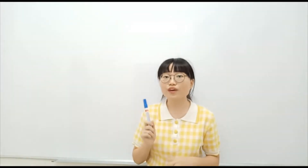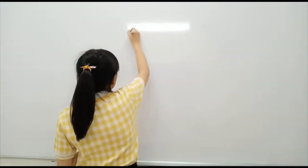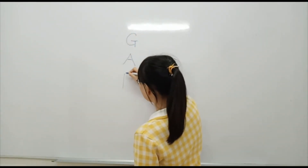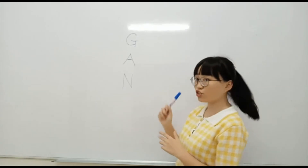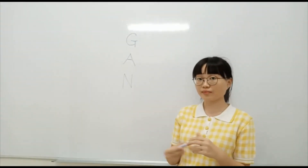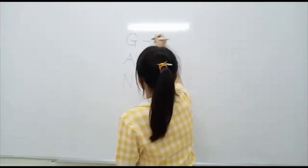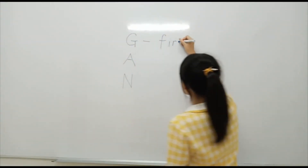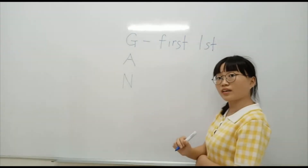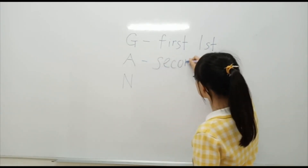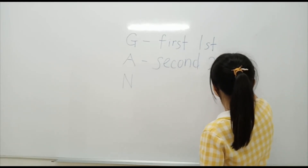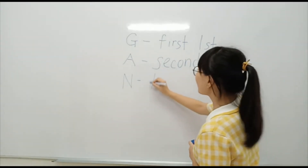Okay, now let's do an activity. You need to write your name on the paper. I will show you an example — I write G-A-N. Have you written your name? We need to write the positions of the letters that come in your name. For example, the letter G is at the 1st position, the letter A is at the 2nd position, and the letter N is at the 3rd position.